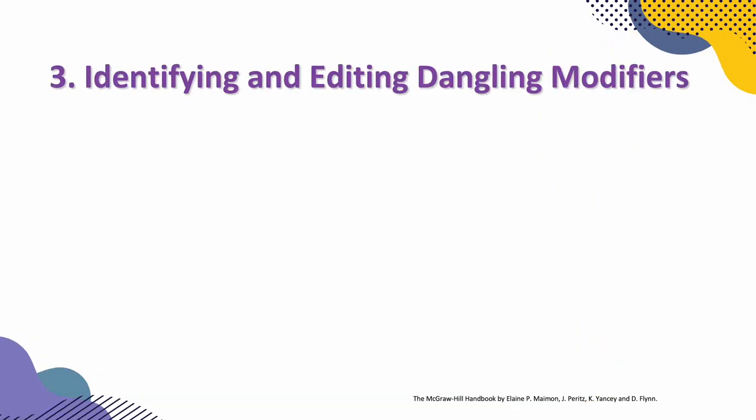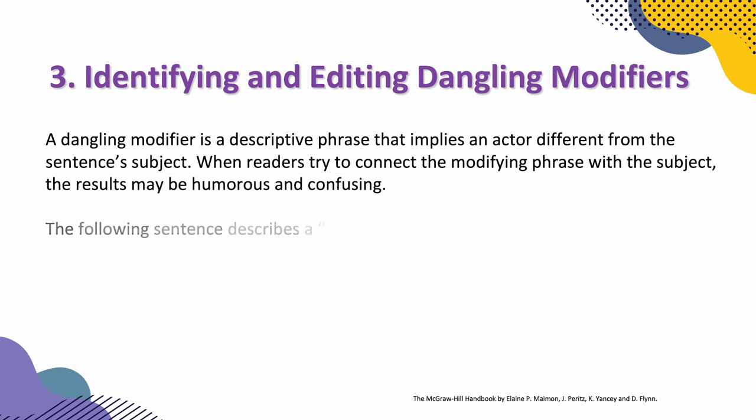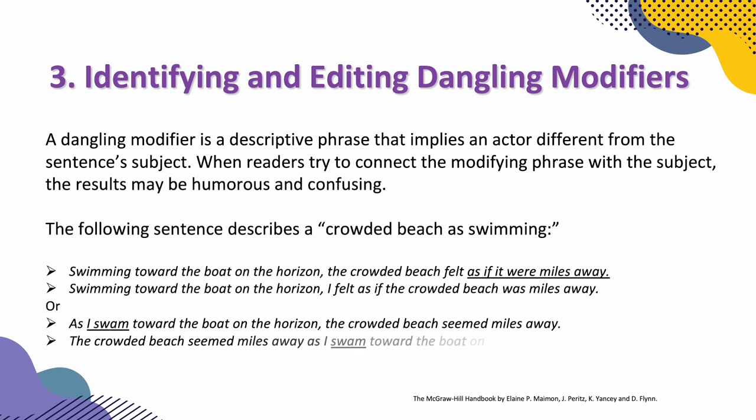Finally, we go to identifying and editing dangling modifiers. A dangling modifier is a descriptive phrase that implies an actor different from a sentence's subject. When readers try to connect the modifying phrase with a subject, the results may be humorous and confusing. The following sentence describes a crowded beach as swimming: 'Swimming towards the boat on the horizon, the crowded beach felt as if it were miles away.' A better version: 'Swimming toward the boats on the horizon, I felt as if the crowded beach was miles away.'